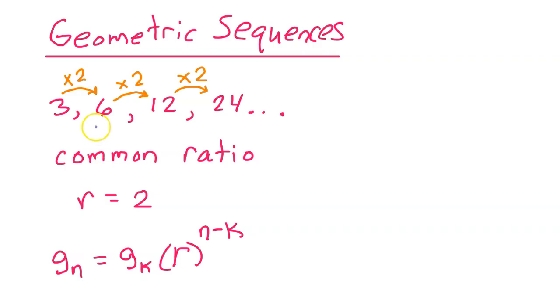Remember that geometric sequences have a common ratio between successive terms. In this case, there's a common ratio of r equals 2 because you can get from one term to the next by multiplying by 2. A geometric sequence can be modeled by this formula where gn is the nth term of the sequence and gk is another term, term k. r is the common ratio and n minus k is this index minus this index.